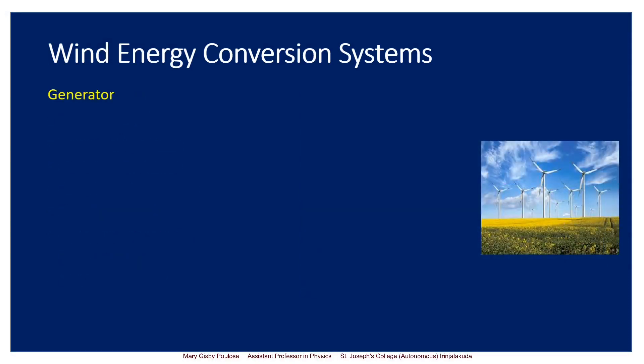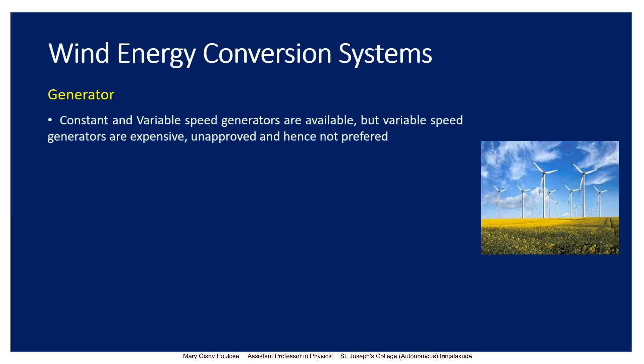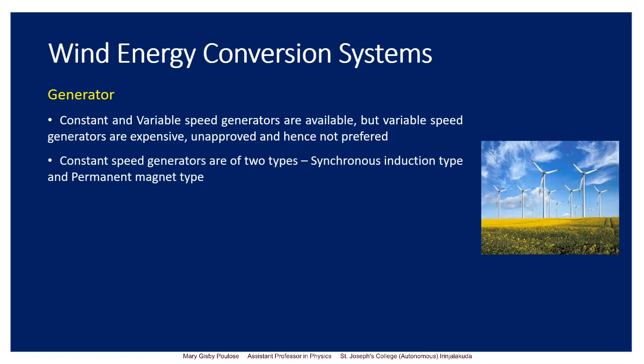The next component is the generator. There are different types: constant speed generators and variable speed generators. We make use of constant speed generators, which provide a constant value of electricity. They are of two types: synchronous induction type and permanent magnet type. The synchronous induction type is preferred because it is highly versatile and compatible with different types of designs.